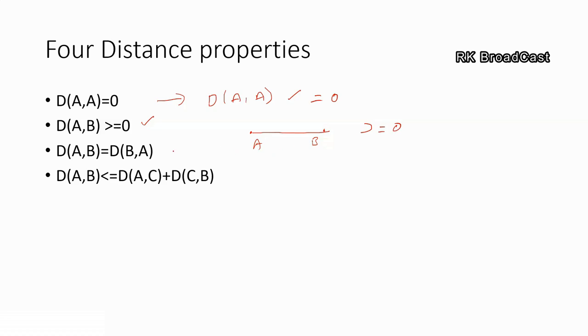Come to the third property. This property indicates the distance is a symmetric function. There are two different points A and B. It means the distance from A to B must be equal to the distance from B to A. That's why we are talking about it is a symmetric property.